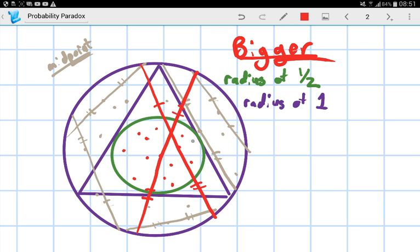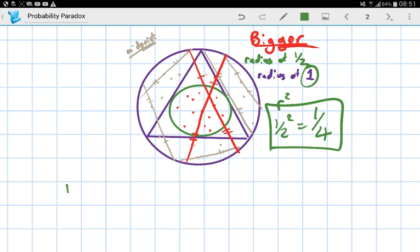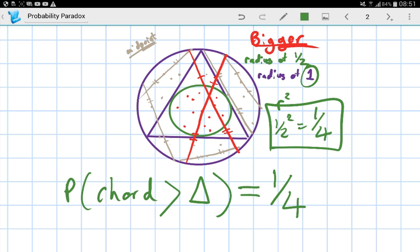And we know that area is radius squared, which means it's a half squared, which is equal to a quarter divided by one squared, which stays one, which means that the probability that a chord is greater than the sides of the triangle is equal to a quarter.